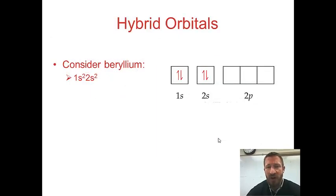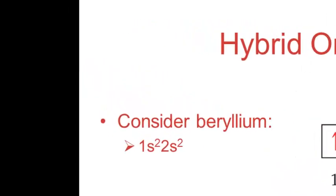So first of all, where do we get these S and P from? Well, if you recall, we've talked about orbitals being S, P, D, and F. The orbitals that are valence are always S and P, and we call it SP because that's where the electrons are found.